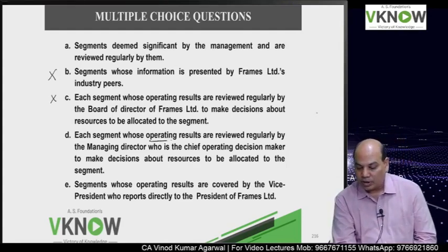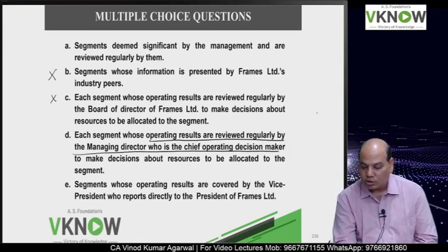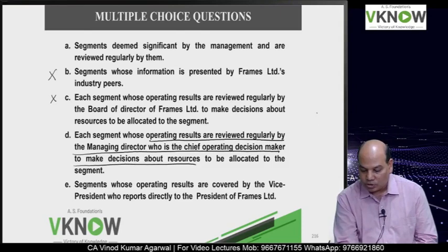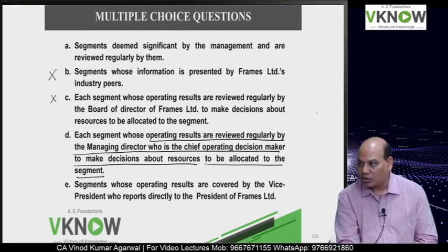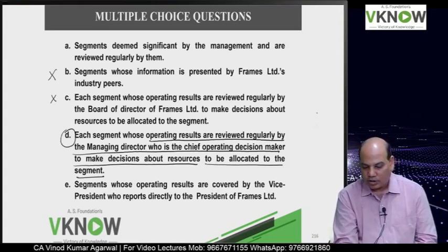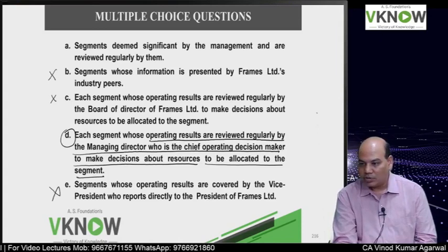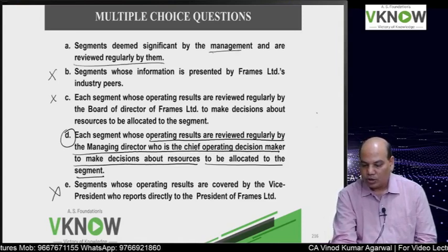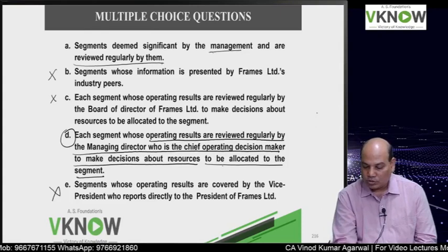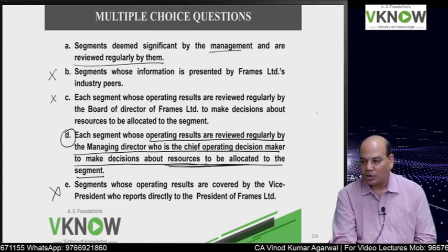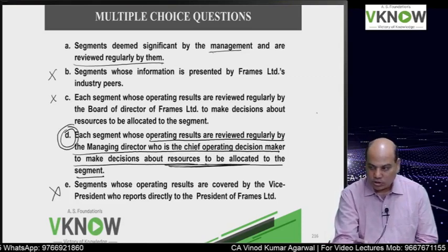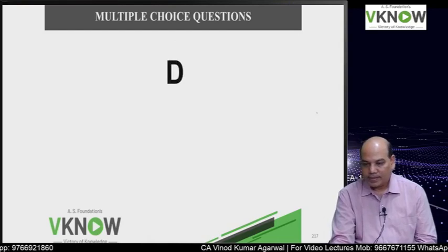Option D: Each segment whose operating results are reviewed regularly by the MD, who is the CODM. Option E: Segment whose results are covered by the vice president who reports directly to the president - totally wrong. Option A is also insufficient because significance alone is not enough - one must also take resource allocation decisions and assessment of performance. Therefore, D is the right answer. Write down D.